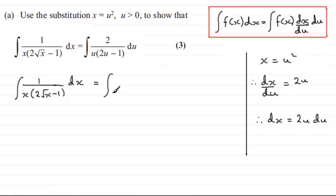I'll write down the integral. We have 1 in the numerator, and in place of x we substitute u squared. Then we have 2 times the square root of x. Since square root of x is just u, we get 2u minus 1.